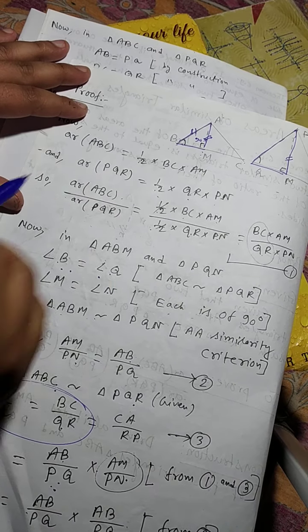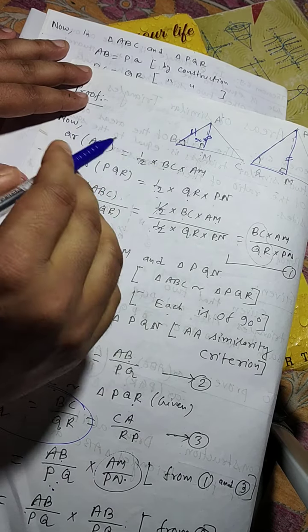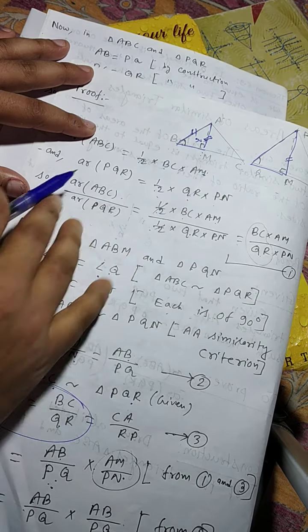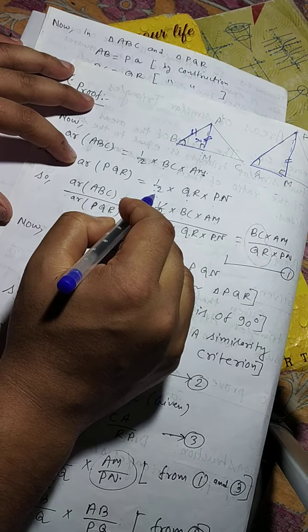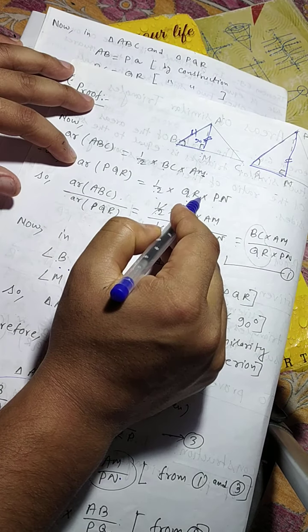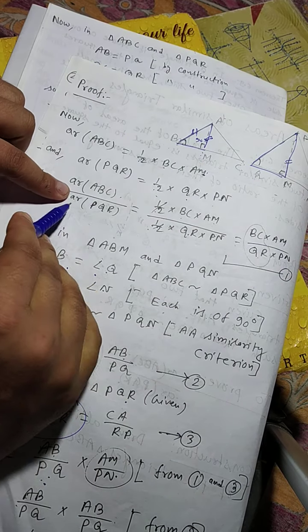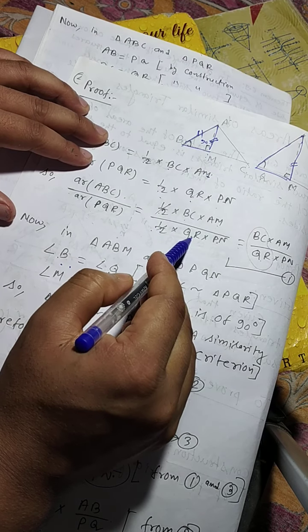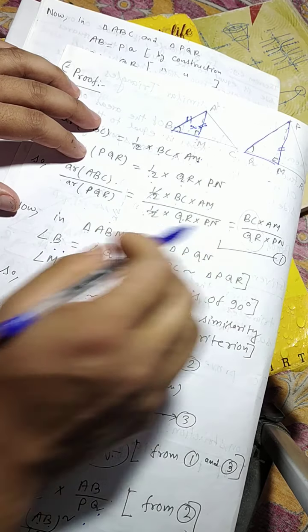Now for the proof: area of ABC equals half into base BC into height AM. And area of PQR equals half into base QR into height PN. So, area of ABC by area of PQR equals half into BC into AM, by half into QR into PN. The halves cancel, giving BC into AM by QR into PN.